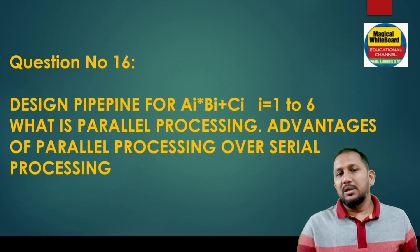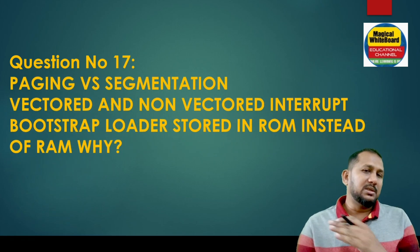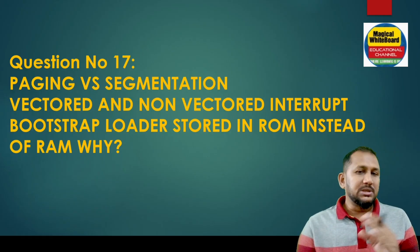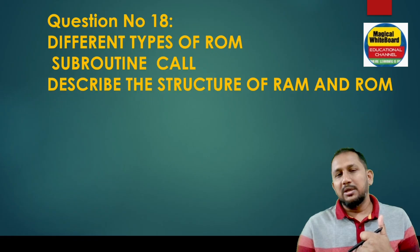Question number 16: design pipelining for AI into BI plus CI, I equal to 1 to 6. What is parallel processing? Advantage of parallel processing over serial processing. Question number 17: paging versus segmentation. Vector versus non-vector interrupt. Bootstrap loader, use of ROM instead of RAM, why.